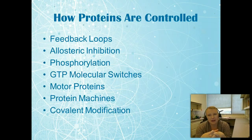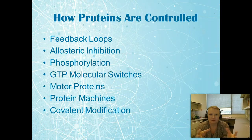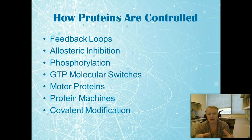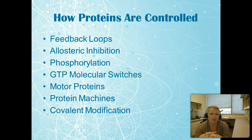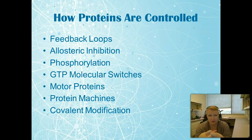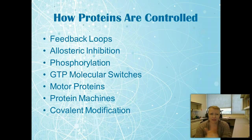Now let's talk about how proteins are controlled. We have many different types of controls: feedback loops, allosteric inhibition, phosphorylation, GTP molecular switches, motor proteins, protein machines, and covalent modification. All of these are very important, so it's important that you understand how they work, and we're going to go through each of these examples.